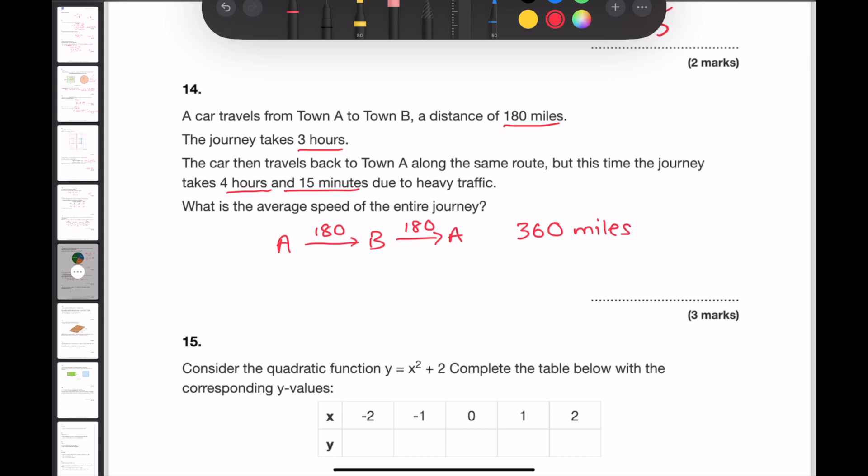The first part of the journey was taken in 3 hours. The second part of the journey was 4 hours and 15 minutes. As a fraction, 4 hours and 15 minutes is 4 and 1 quarter hours. This means that the total amount of time was 7 and 1 quarter hours.